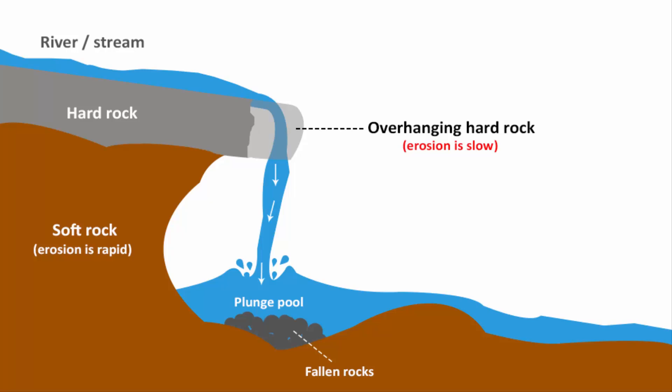At the bottom, you will notice that a plunge pool is formed. Further, it begins to undercut the soft rock layer. As the undercutting continues, eventually the overhanging hard rock becomes unstable and collapses.